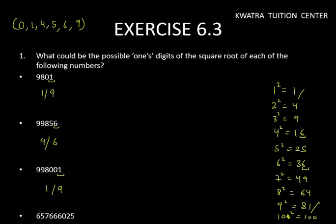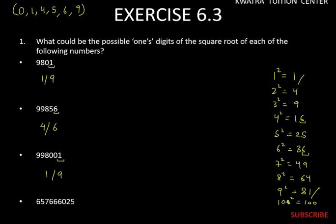Next, we have 657666025, ending in 5. This is the last one. Which number squared ends in 5? Only 5 squared ends in 5. This means the square root of a number ending in 5 will end in 5.